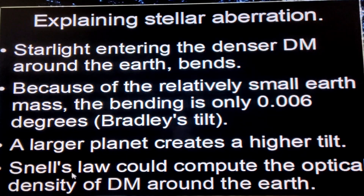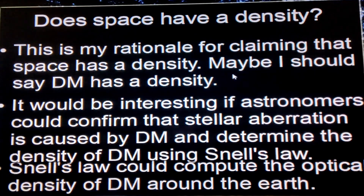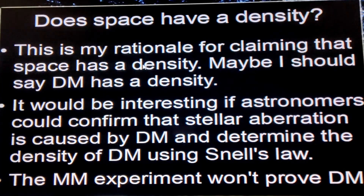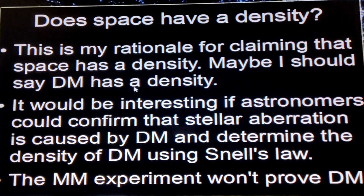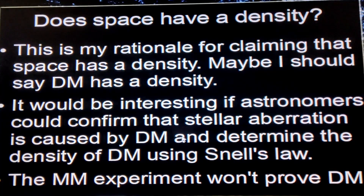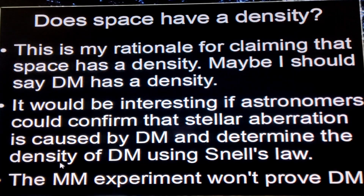If you lived on a larger planet, you would see a higher tilt. You could probably use Snell's law to compute the optical density of dark matter around the earth from this 0.006-degree number. This is my rationale for claiming that space — or dark matter — has a density. It would be interesting if astronomers could confirm that stellar aberration is caused by dark matter and determine its density using Snell's law. The Michelson-Morley experiment wouldn't be able to prove dark matter because dark matter travels with the earth itself.